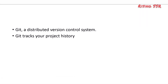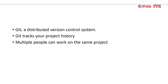It also allows multiple people to work on the same project, helping them to edit the same file simultaneously. Git is distributed, reliable, and fast. And it is free. A distributed system lets you work offline — you can make changes without having access to the server that stores the central repository.